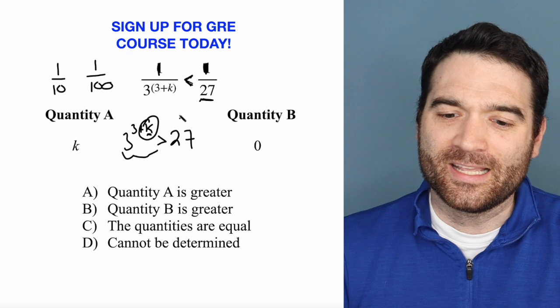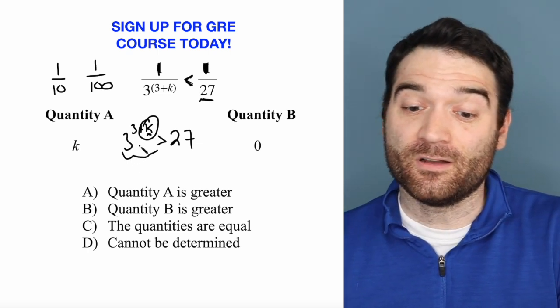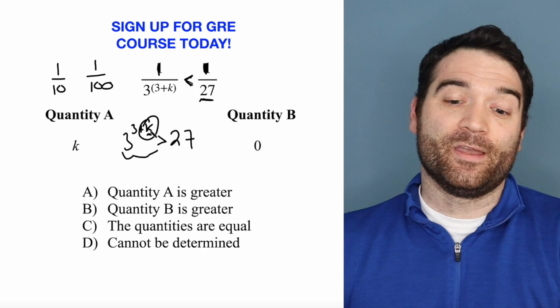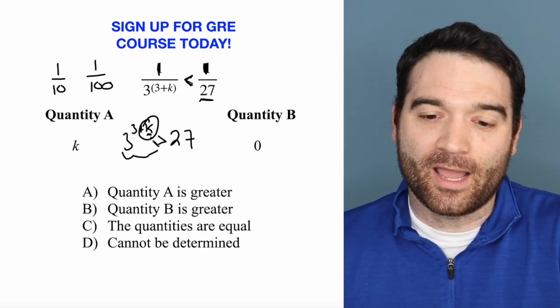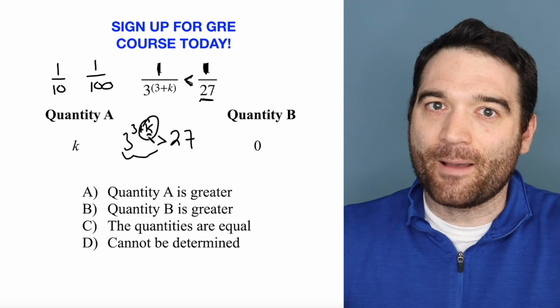1, 2, 3, 4. And you can test that out just to see it for yourself. If I make it smaller than 0, that's 3 minus 1, excuse me, 3, yeah, minus 1, for instance, would be 3 to the 2. That's not bigger than 27.